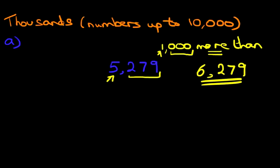So 1,000 more than 5,279 is 6,279. It really is that simple.